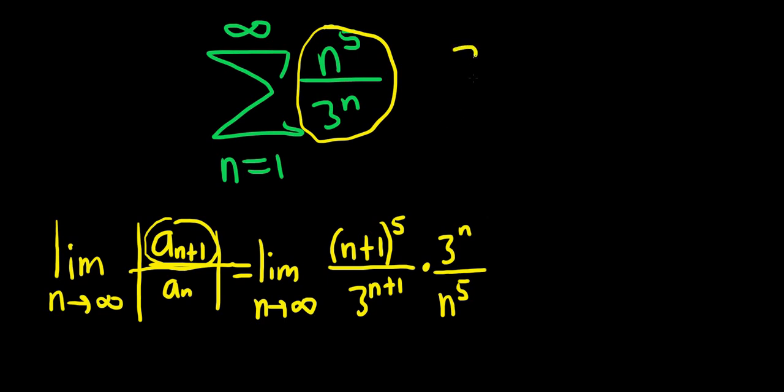First, let's focus on the 3's. Notice that 3 to the n over 3 to the n plus 1 can be written as 3 to the n over 3 to the n times 3 to the 1. Because when you multiply the bottom pieces here, you add the exponents. 3 to the n times 3 to the 1 is 3 to the n plus 1. These cancel and you get 1 third.